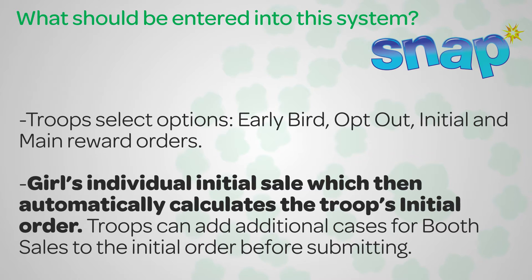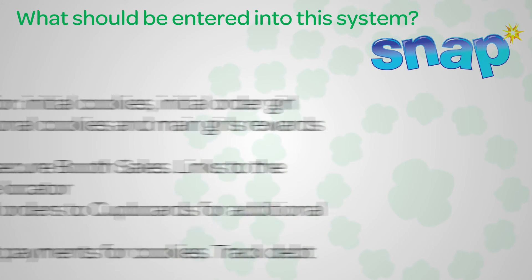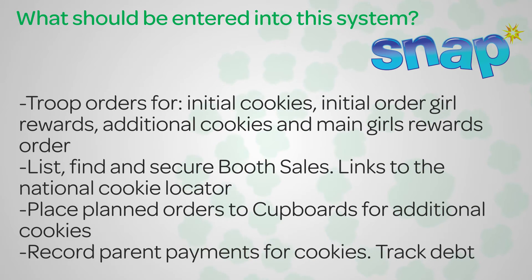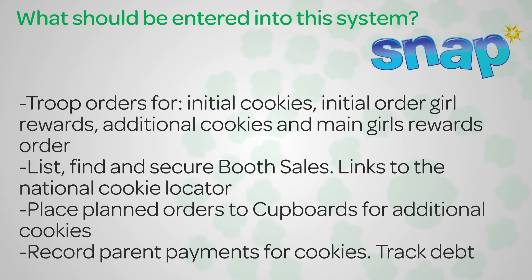Girls' individual initial sale will be entered and then it automatically calculates the troop's initial order. Troops can add additional cases for booth sales to the initial order before submitting. Troop orders for initial cookies, initial order girl rewards, additional cookies, and main girl rewards are ordered through the system. The system also will list, find, and secure booth sales for a troop and links to the national cookie locator.